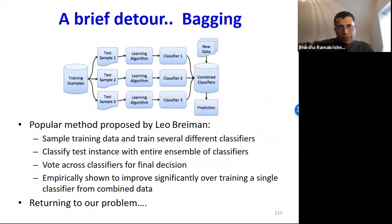But first, let me digress briefly to a popular machine learning technique called bagging, proposed by Leo Breiman. The idea here is to use the training data to build several classifiers and ensemble them. The way we train the classifiers is by sampling the training data. Each classifier is built on a different sample. Test instances are now classified using each of these classifiers, and then we vote across the classifier outputs for the final classification.